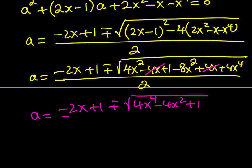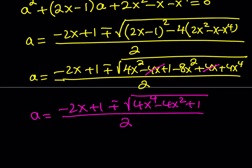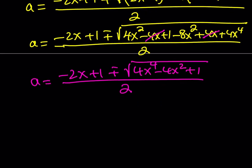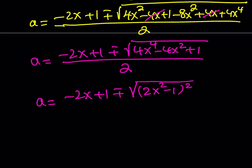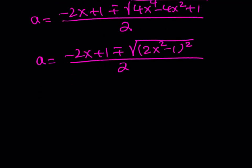What's beautiful is that what we have inside the radical is a perfect square: it equals (2x squared minus 1) squared. The square root of something squared is just the absolute value, but since we already have a plus-minus, we can write: negative 2x plus 1, plus or minus (2x squared minus 1), all over 2.